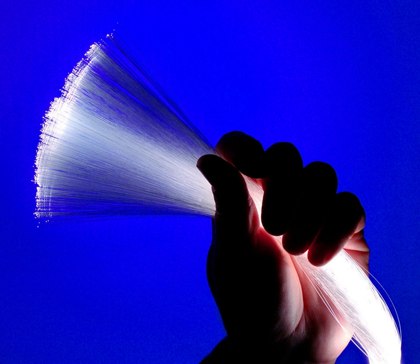Modems are used to connect network nodes via wire not originally designed for digital network traffic, or for wireless. To do this, one or more carrier signals are modulated by the digital signal to produce an analog signal that can be tailored to give the required properties for transmission. Modems are commonly used for telephone lines, using a digital subscriber line technology.